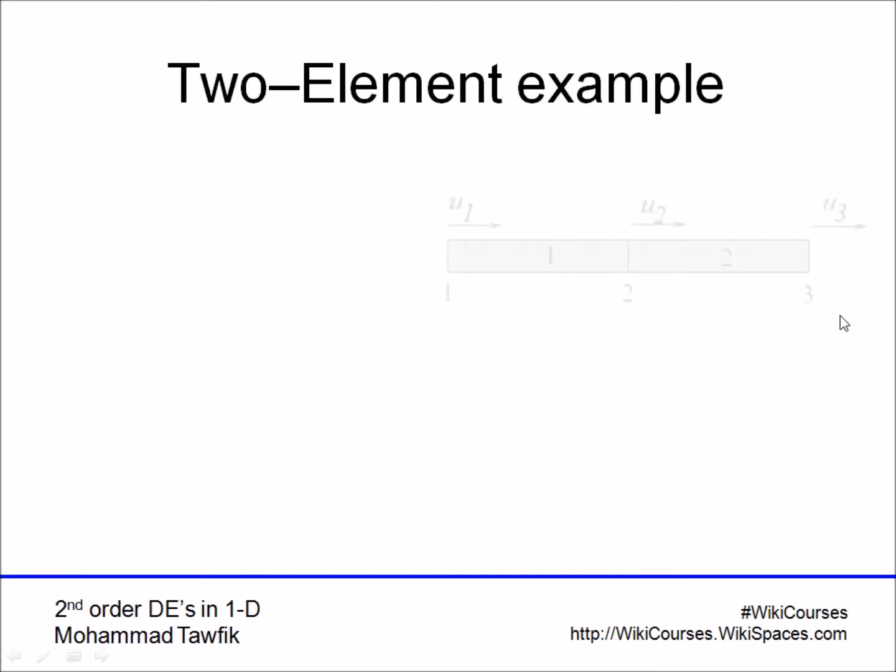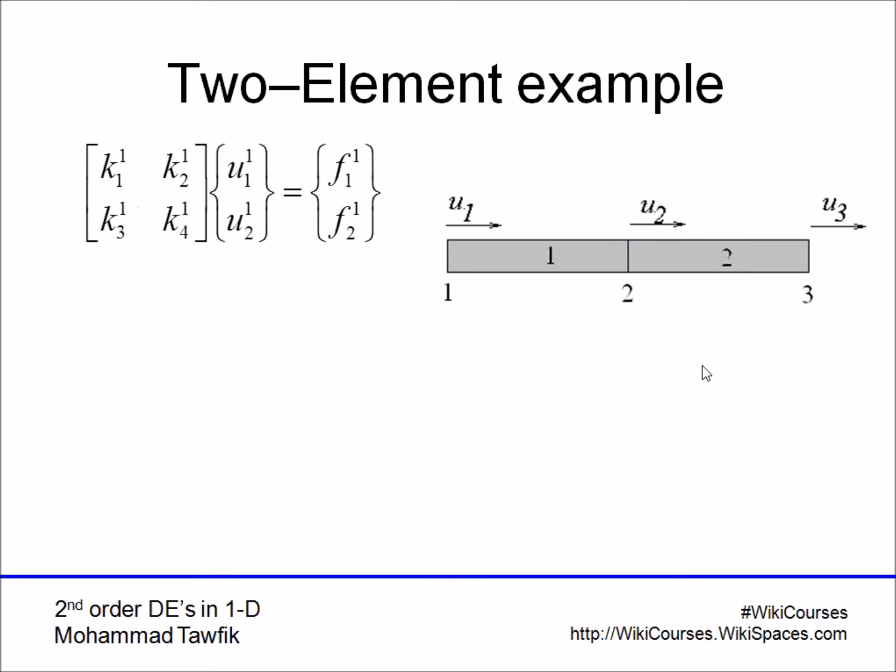Now if we have two adjacent elements, element one and element two, each has its u₁ and u₂. In the second element we call them u₂ and u₃. The first element is presented by this equation and the second element by this equation.